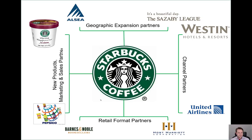There are many different types of alliances. Starbucks, as an example, can work with channel partners such as Westin Hotels or United Airlines just to get their brand on those places. They can do geographic expansion into new areas, create new products with partners such as Starbucks branded ice cream or getting their coffee into PepsiCo bottles, or use retail format partners like getting into a Barnes & Noble coffee shop.